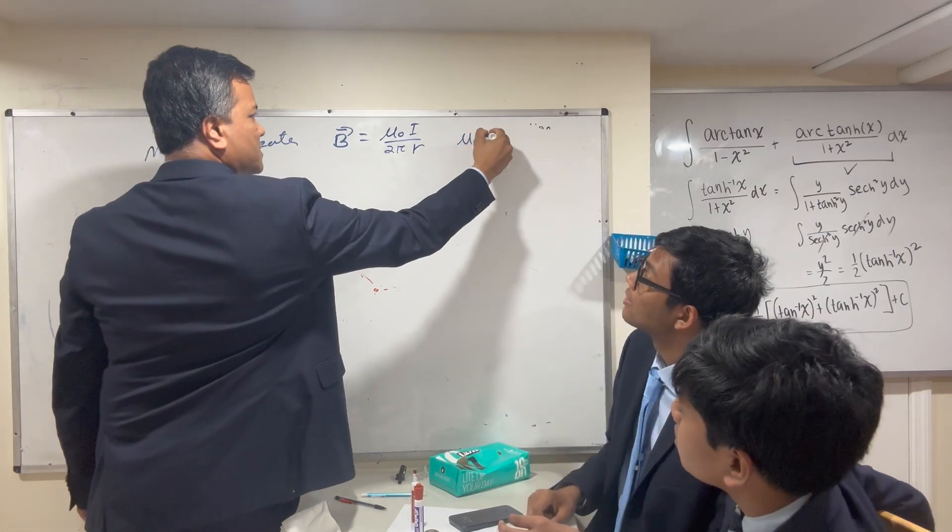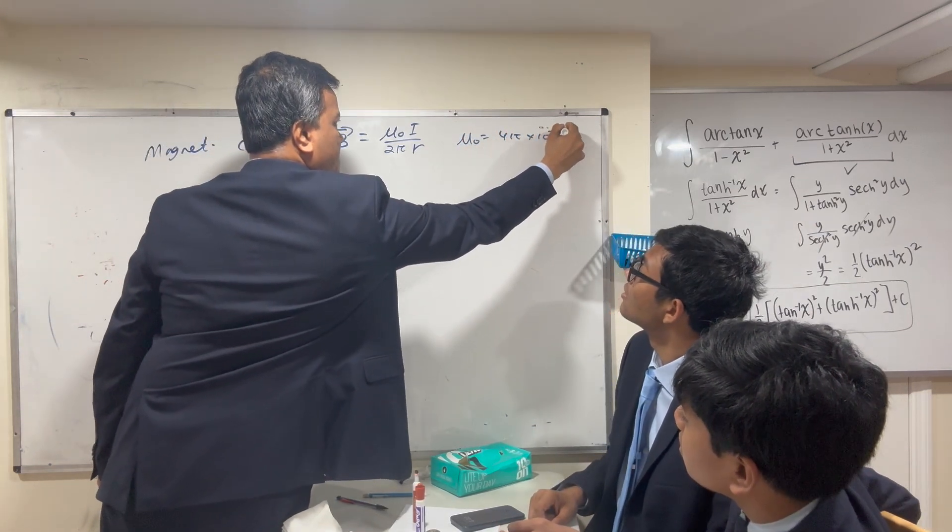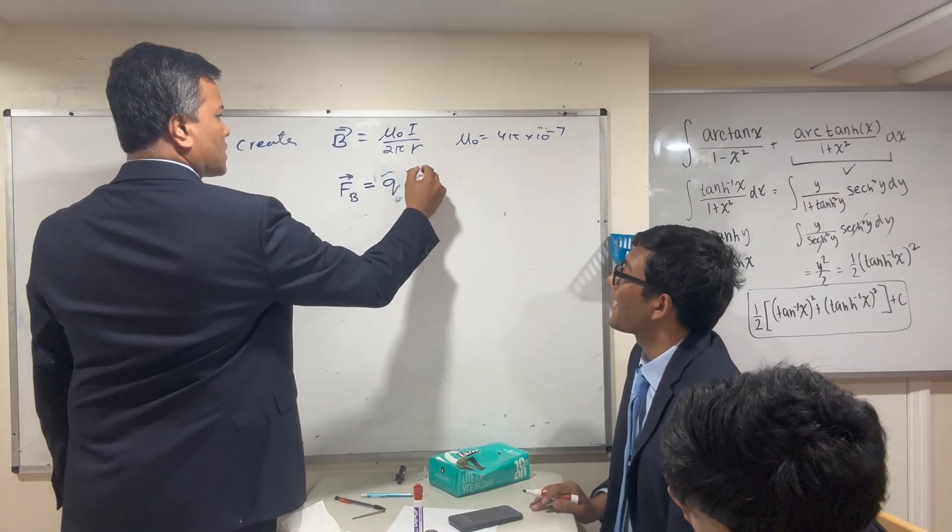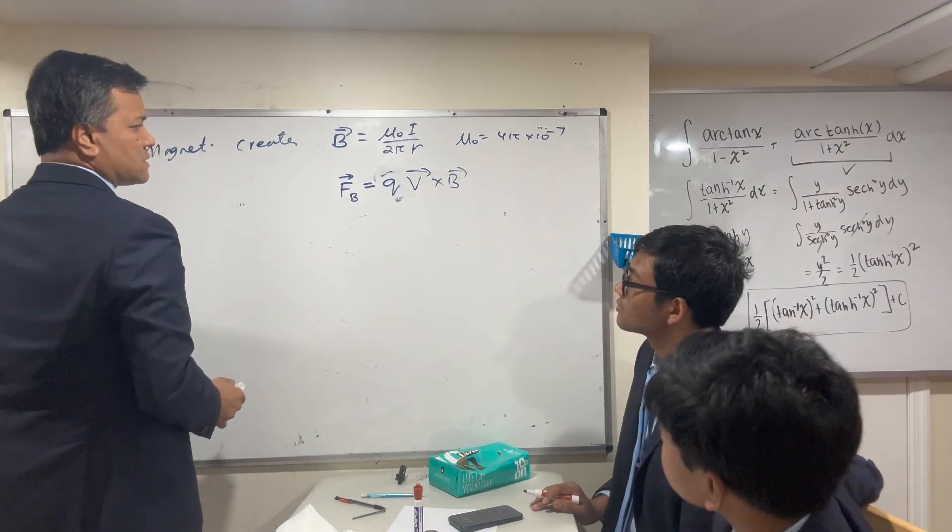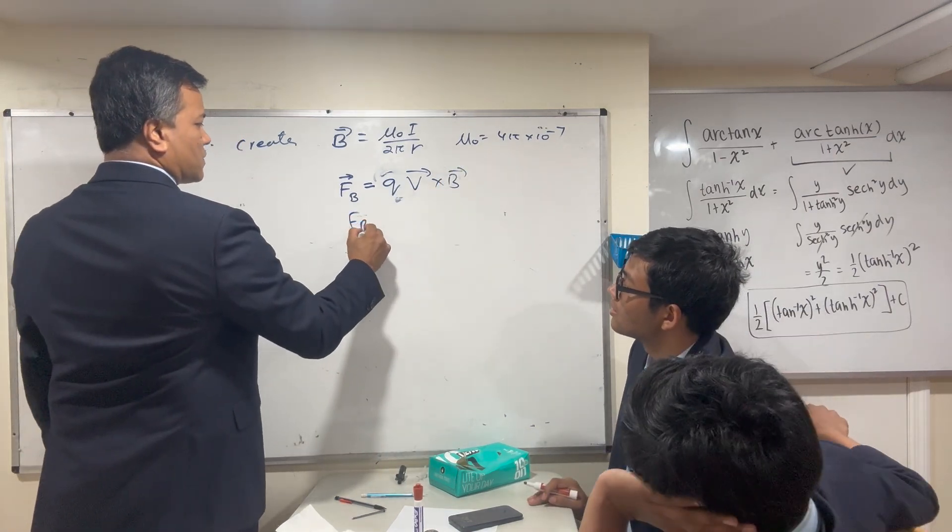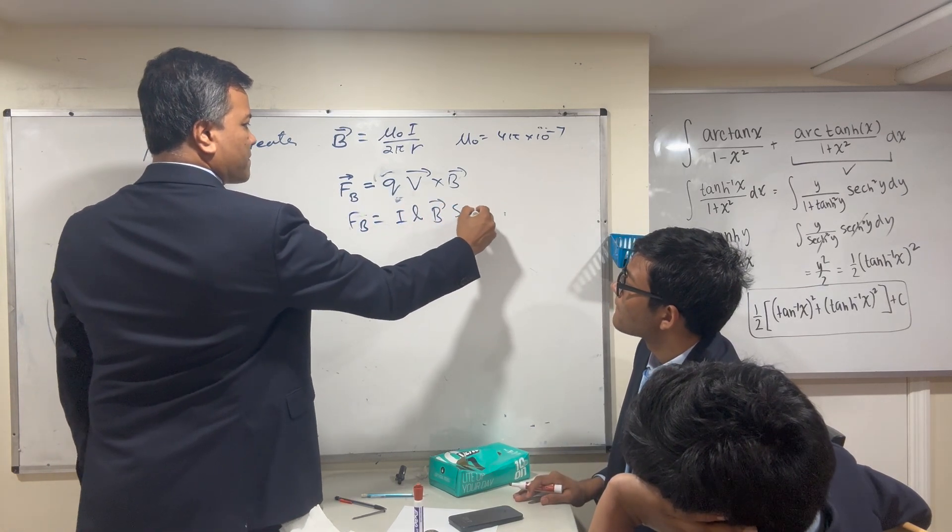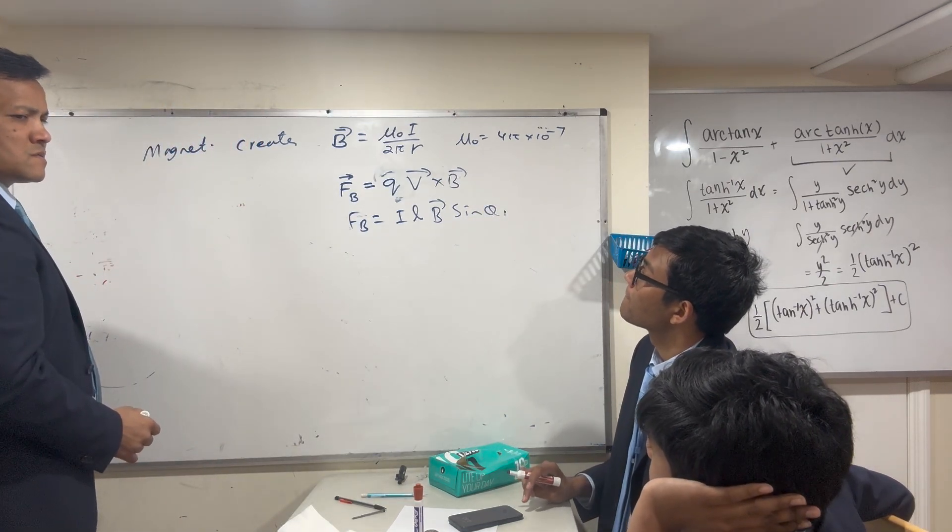What is μ₀? 4π times 10 to the negative 7. What is the force? qvB, v cross B. One is velocity, one is magnetic field. The other one would be current length magnetic field sine θ. We don't need this for the lesson; we're not doing reasons today.